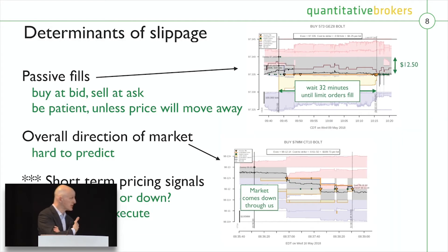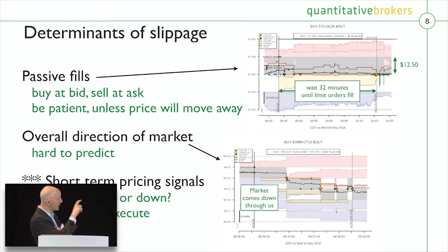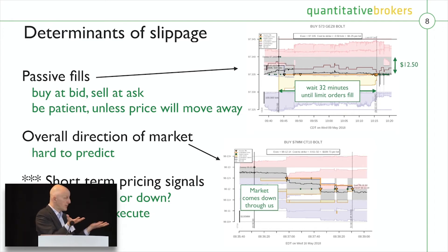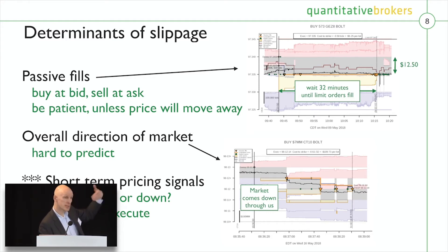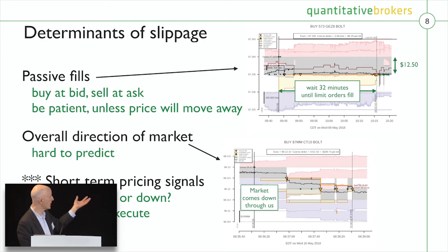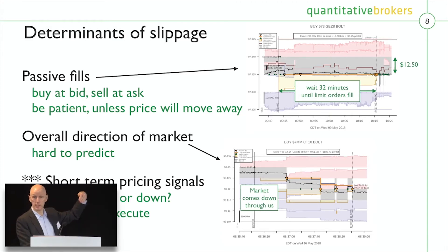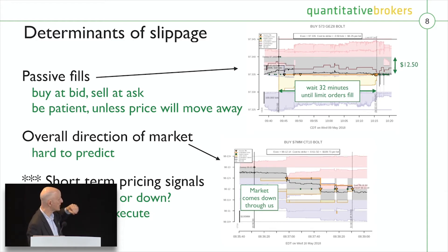What are the key ingredients that help us get good execution? We try to get passive fills. These markets typically have fairly large bid-offer spreads, so we would like to put a limit order where we get filled passively. In the example on the right, we are buying a eurodollar — we put a limit order on the bid. We wait for 32 minutes. After about 32 minutes, we get the order completed by somebody selling to us at the bid — worth $12.50 in this product. We could have executed earlier and paid the spread, but it's better to be patient and wait.